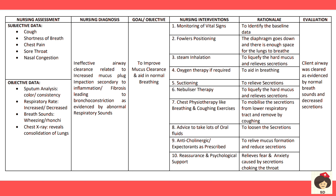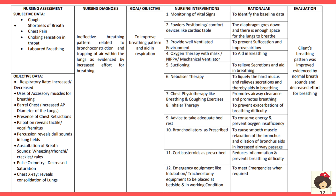Interventions: monitor vital signs to identify the respiratory rate as increased or decreased. Use Fowler's positioning so the diaphragm descends, giving the patient more space to breathe. Steam inhalation liquefies mucus and helps expel it. Oxygen therapy aids breathing. Nebulizer therapy loosens secretions. Chest physiotherapy mobilizes secretions from the lower lungs so they can be expelled by coughing. Advise the patient to take more oral fluids to loosen thick secretions. Anticholinergics and expectorants help remove and expel secretions.